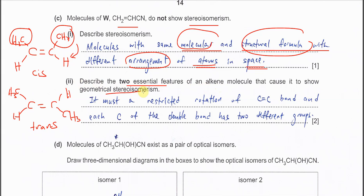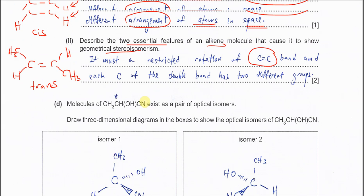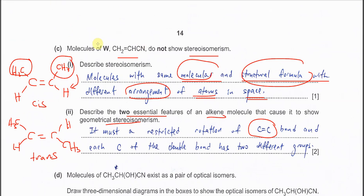Part (ii): Describe two essential features of an alkene molecule to show geometrical isomerism. Very easy: first, it must have a C=C double bond because it's an alkene, and these two carbons must have different groups. Each carbon must have two different groups. Same groups cannot form cis-trans. That's why W cannot form cis-trans because this carbon has two hydrogens, which are the same group.